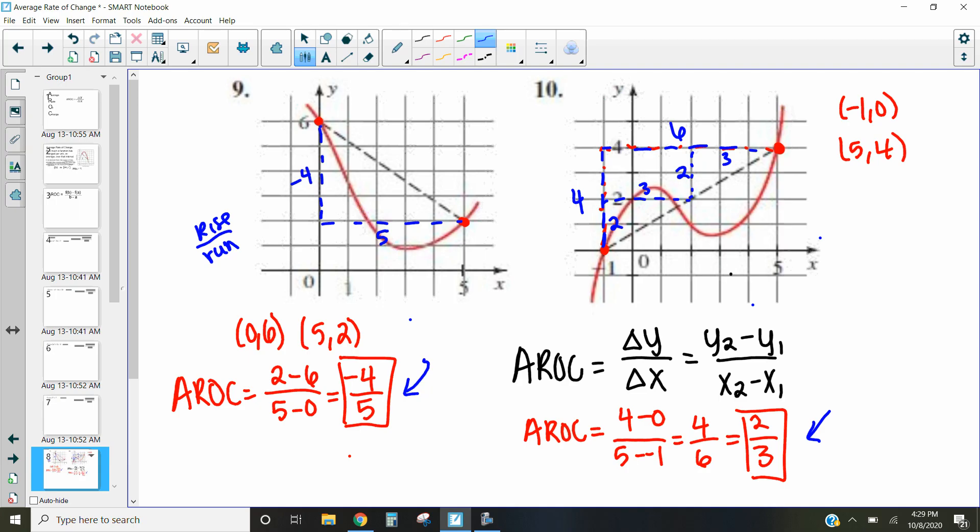In our other method, we can just count on our graph and we get that same thing. We either go up 4 over 6, which simplifies to 2 over 3, or we can count this up 2 over 3, up 2 over 3, but that's our slope at 2 thirds.